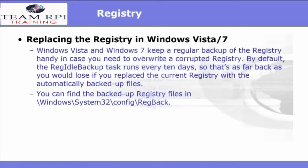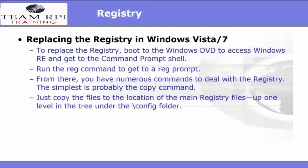The method of replacing the registry in Windows 7 and Windows Vista is a little bit different. Windows Vista and Windows 7 keep a regular backup of the registry handy in case you need to override a corrupt registry. By default, the RegIdleBackup task runs every 10 days, so that should be as far back as you would lose if you replace the current registry with the automatically backed up files. You can find the backed up registry files in Windows\System32\Config\RegBack. To replace the registry, you'll need to boot from a Windows DVD, access Windows RE, and get the command prompt shell. Next, run the reg command to bring up the reg prompt. From there, you'll have numerous commands to choose from. The simplest is probably the copy command — just copy the files to the location of the main registry files, located up one level in the tree under the config folder.